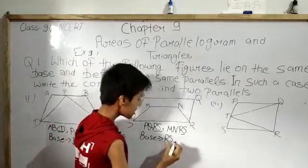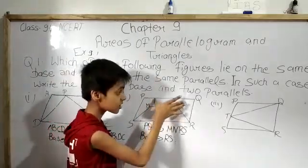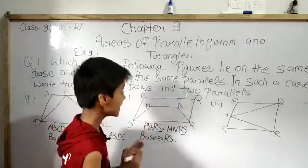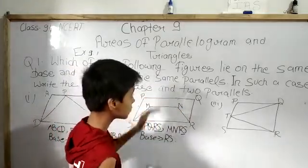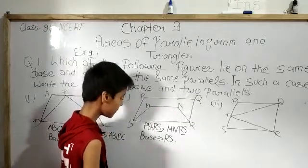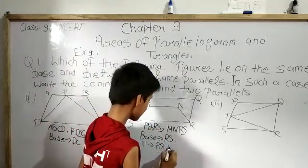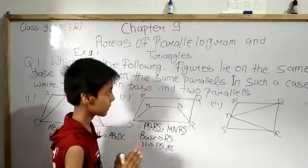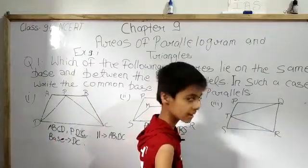Now we have to tell whether PQRS and MNRS lie between the same parallels. For quadrilateral MNRS, side MN should touch PQ, but MN is not touching PQ. By this we conclude that they do not lie between the same parallels. The parallels of this parallelogram are PQ and RS, but the two figures do not lie between the same parallels.